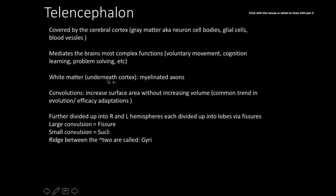Underneath the cortex is white matter — myelinated axons. The convolutions throughout the telencephalon increase the surface area-to-volume ratio, which is a really common trend in evolution. Taking a course on vertebrate evolution is highly recommended for anyone going into medicine, because you learn why structures are the way they are. This increase in surface area enables the brain to do its job without taking up too much space, which is nice in terms of energy efficiency and reproduction.